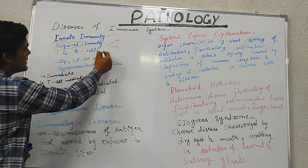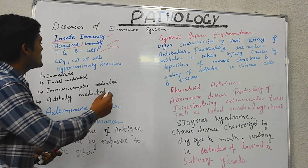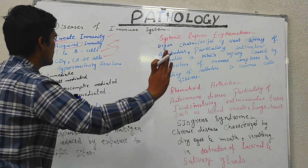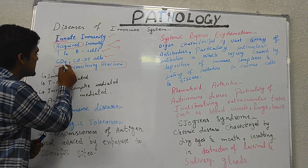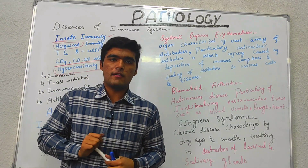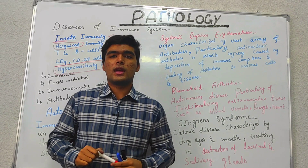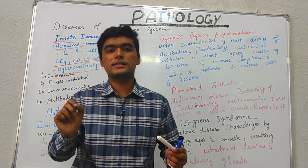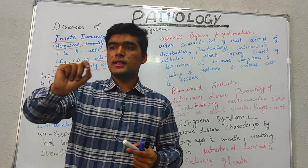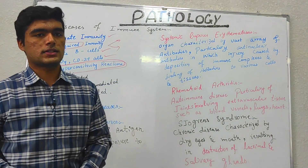We also have T cells and B cells, Thymus and Bursa of Fabricius, CD4 cells, and CD28 cells in the immune system. Our immune system mostly plays a protective role, but in some cases when it plays a destructive or injurious role, we say those reactions are hypersensitivity reactions.